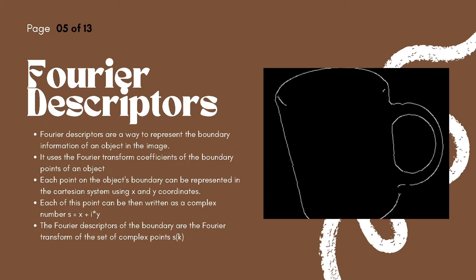What are Fourier descriptors? Fourier descriptors are one way to represent the boundary information of an object or shape in an image. In Fourier descriptors, you find the Fourier transform coefficients of the boundary points of the object. By sampling the boundary of a shape, we obtain a set of points, and each such point can be represented using a pair of x and y coordinates in the Cartesian coordinate system. This pair of x and y coordinates can be converted into a 1D problem by making the xy coordinate into a complex number S, where S equals x plus iy. The Fourier descriptor of this boundary will be the Fourier transform coefficients of this set of complex points.